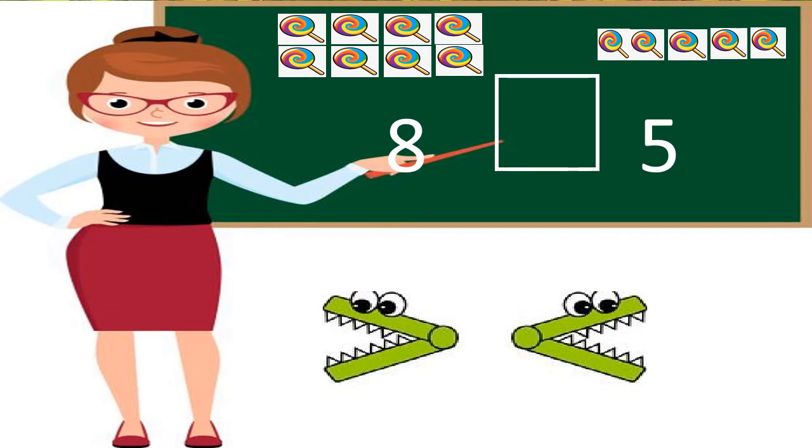Yummy, yummy candies. Now, on one side, there are eight candies and on the other side, there are five candies. Tell me which number is bigger, eight or five? Hey, you are right. Number eight is bigger than number five. So, we will put this sign.